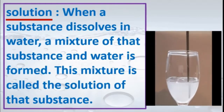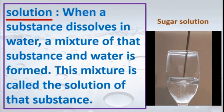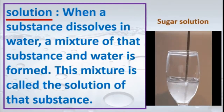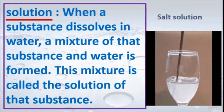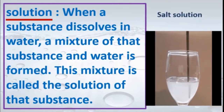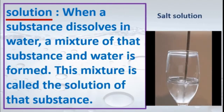When a substance dissolves in water, a mixture of that substance and water is formed. This mixture is called the solution of that substance. If I put sugar in water, we get sugar solution. If I put salt in water, we get salt solution. Water in this context is called the solvent.